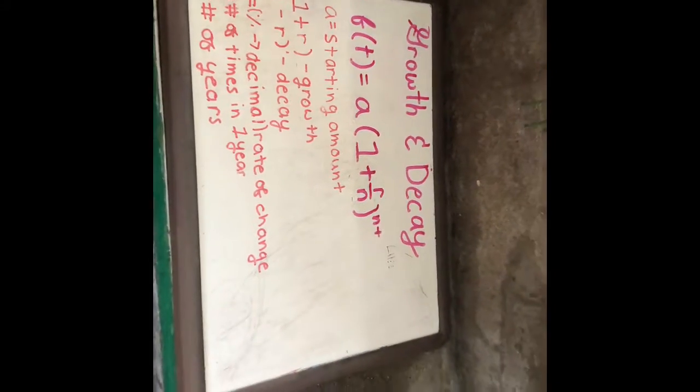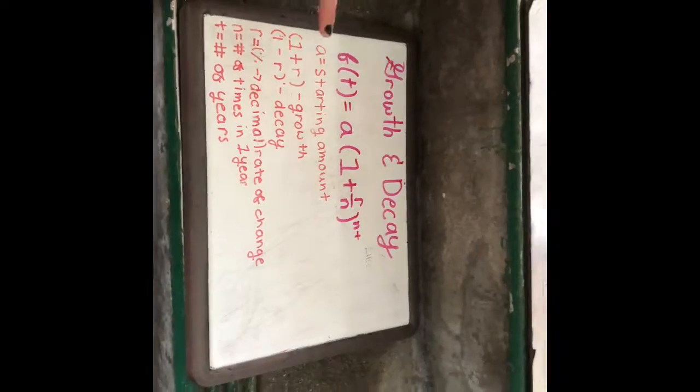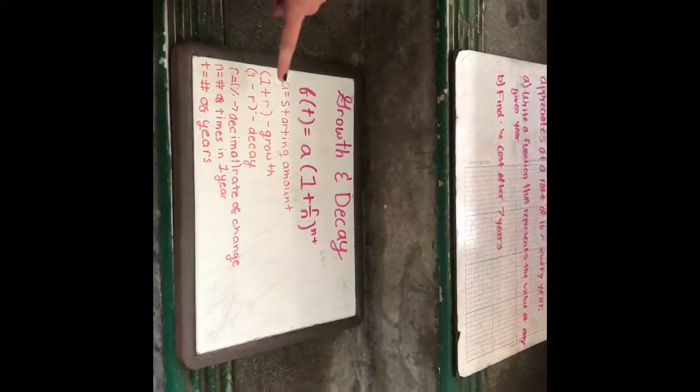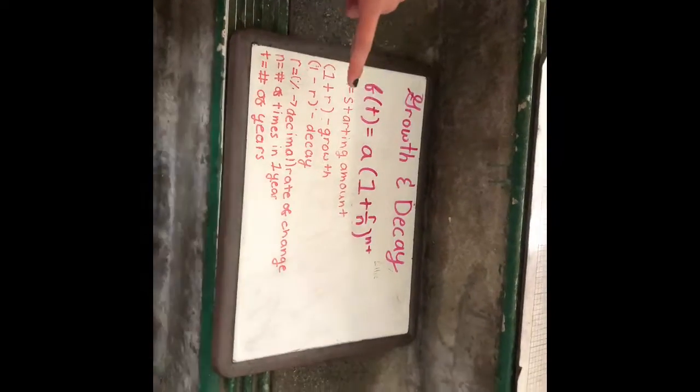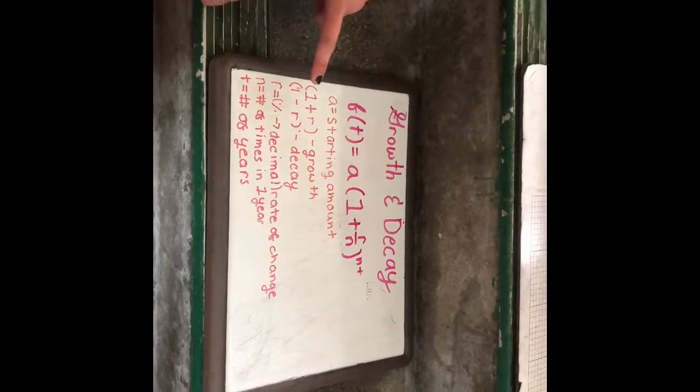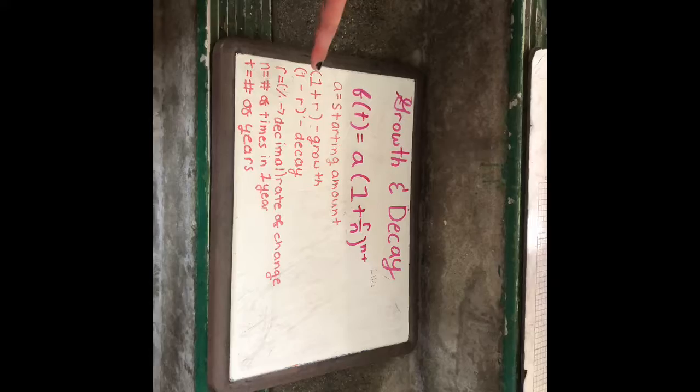A is the original starting amount. If the problem indicates growth, then 1 will be added to r. If it indicates decay, then 1 will be subtracted from r.